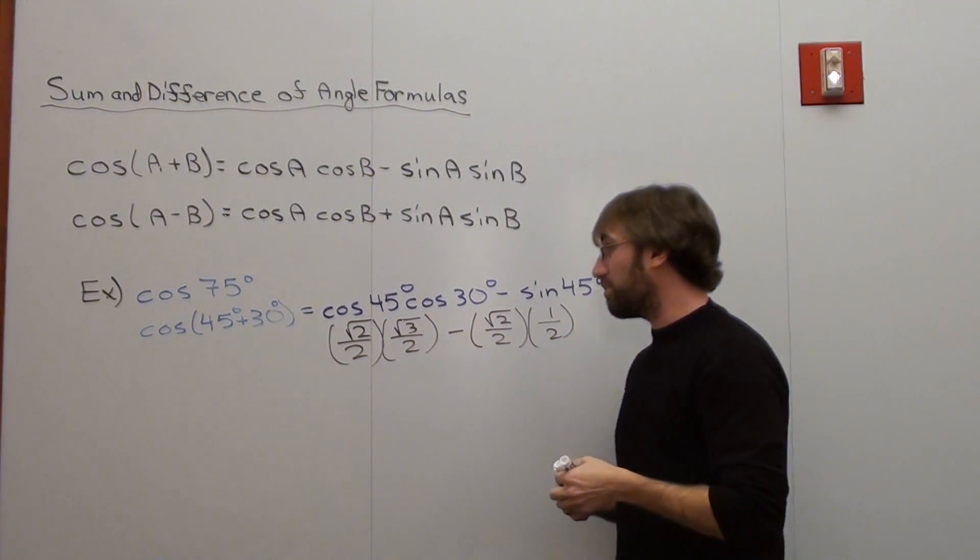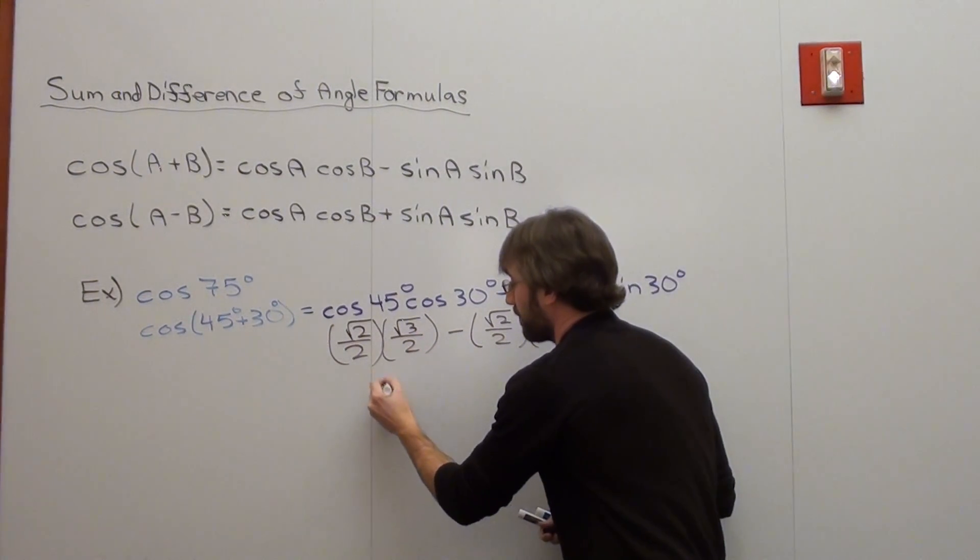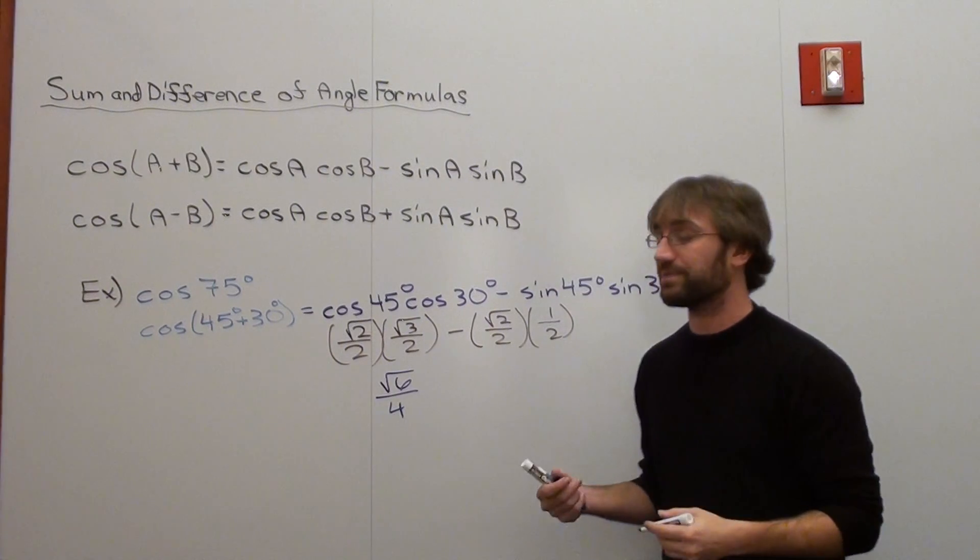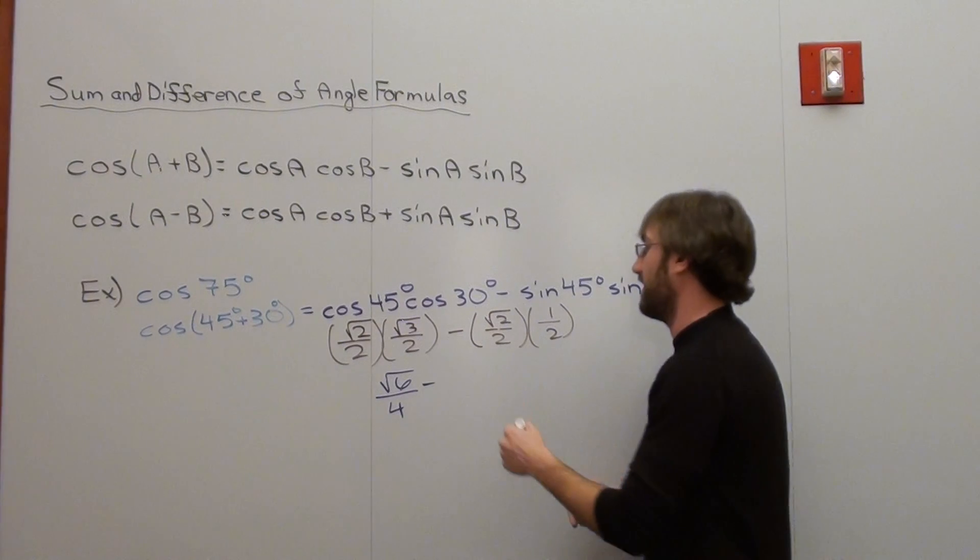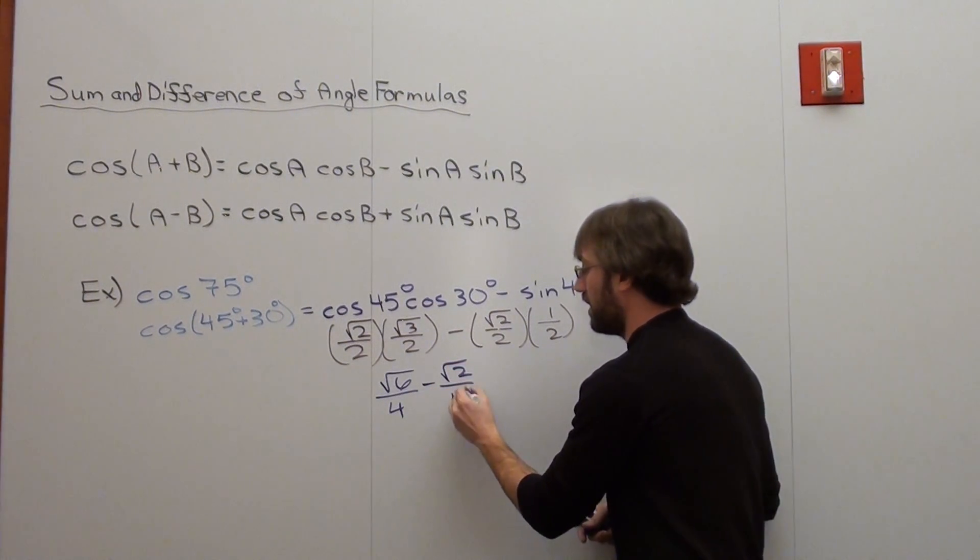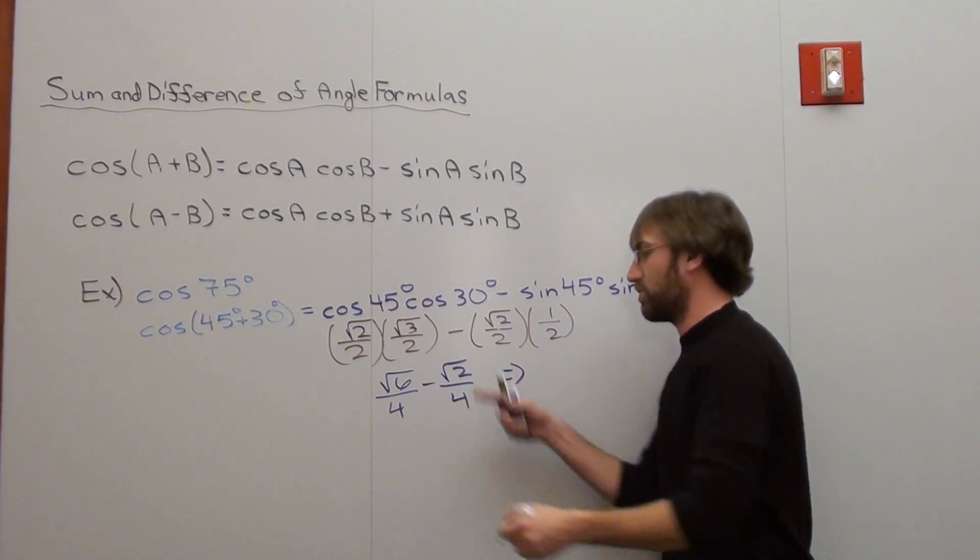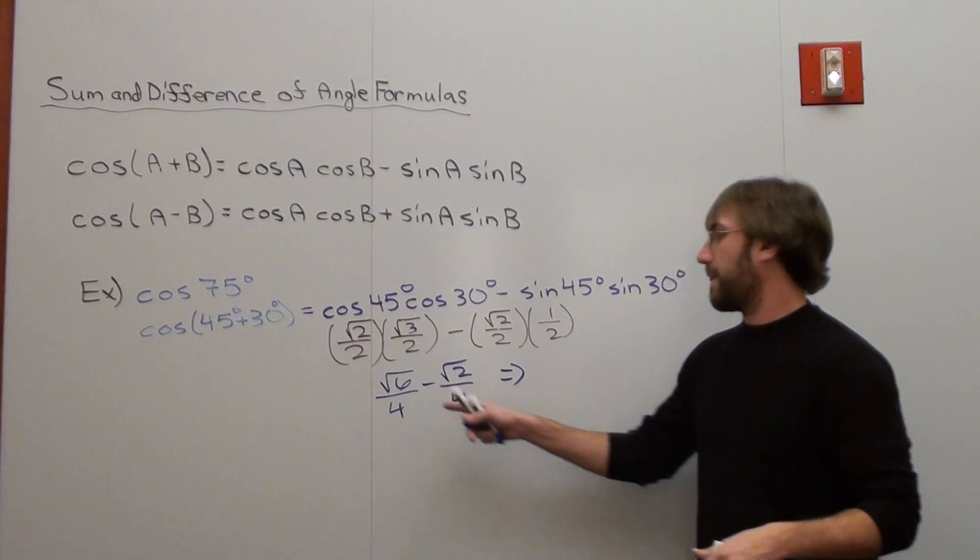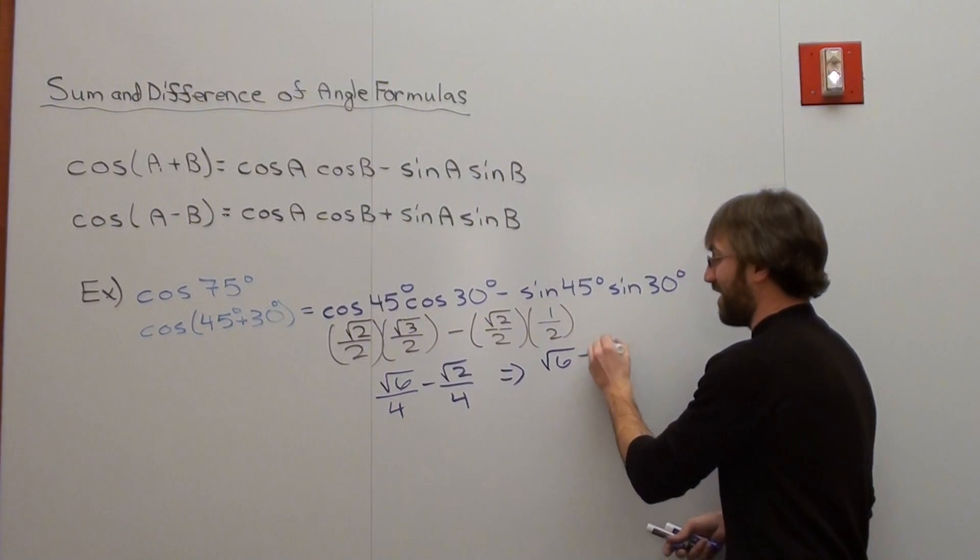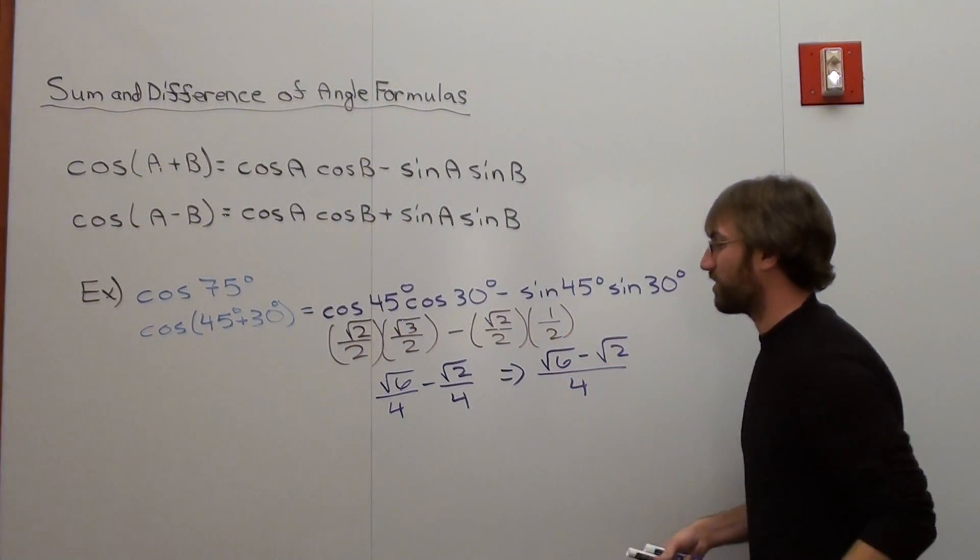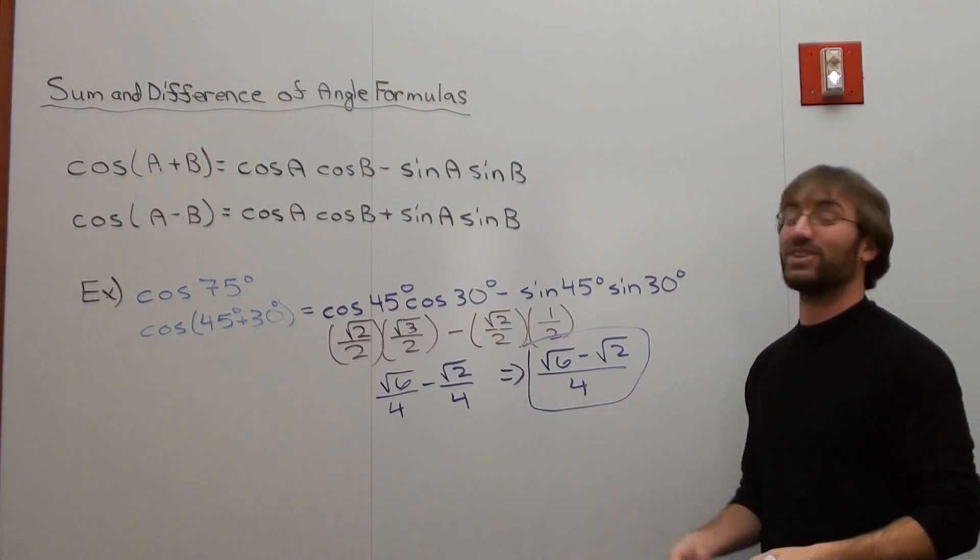And what that basically turns out to be is square root of 2 times the square root of 3 is the square root of 6 over 4, and since they have the same denominator, I can put it over one denominator. You can't actually subtract the square root of 6 and the square root of 2. It doesn't work. And you can't simplify the square root of 6. So the answer is just the square root of 6, subtracted by the square root of 2, all over 4. And here's where I usually get a lot of complaints from students that say, this is garbage. I didn't actually learn anything here.